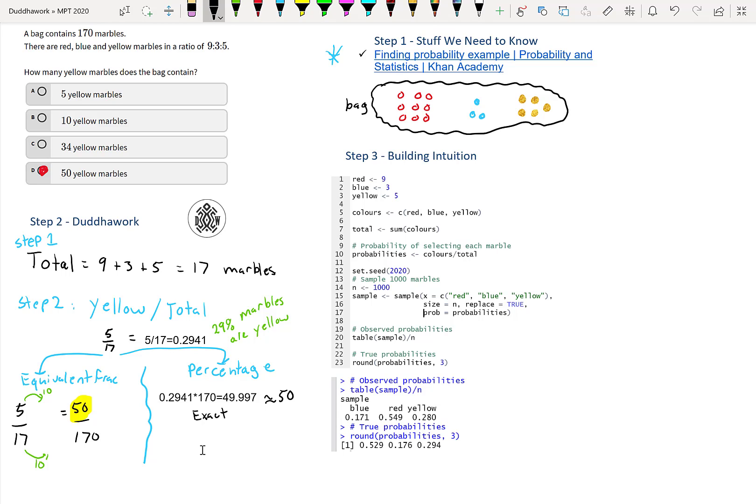So then if 29% of the marbles in the bag, we can simply do 0.2941 times the 170 to find out how many are yellow, and it's approximately 50 as well. But let's say we want it to be exact. Then we would keep the fraction: 5 over 17 times 170. You can cancel this by dividing by 17, and that would be 10. Then that's 5 times 10, which is 50. We have 50 yellow marbles in the bag.